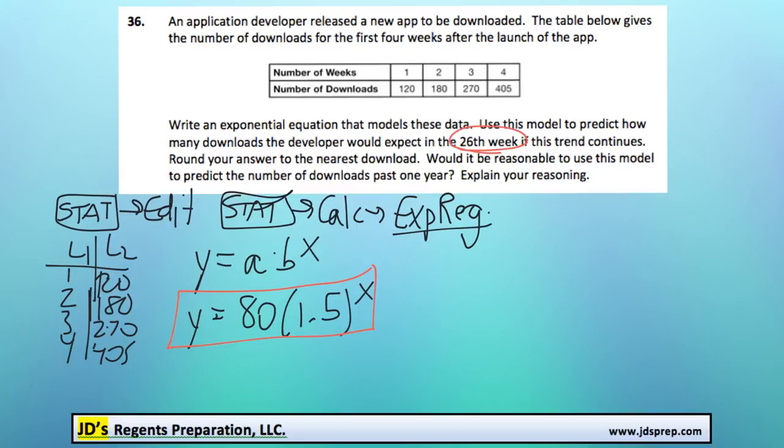And that's really simple to do. All we need to do is replace the number of weeks, our x variable, with the number 26. Let's do that down here. So what we're going to calculate is 80 times 1.5 to the power of 26.